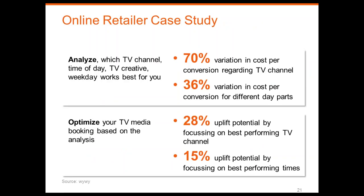The final case study was with an online retailer. We saw a 70% variation in performance between channels and a 36% variation in day parts. The total optimization potential was between 15 and 30% — as a rule of thumb, we generally say at least 20% improvement should be possible. In this case the TV campaign was booked through a direct response TV agency, meaning a lot of optimization had already been done in the planning stage, yet much higher improvements can be achieved as seen in the other examples.